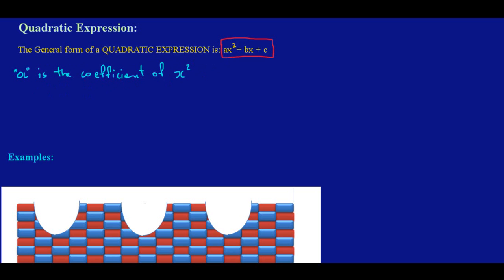And we have b here. B is called the coefficient of the term in x. If you notice, b is in front of x.